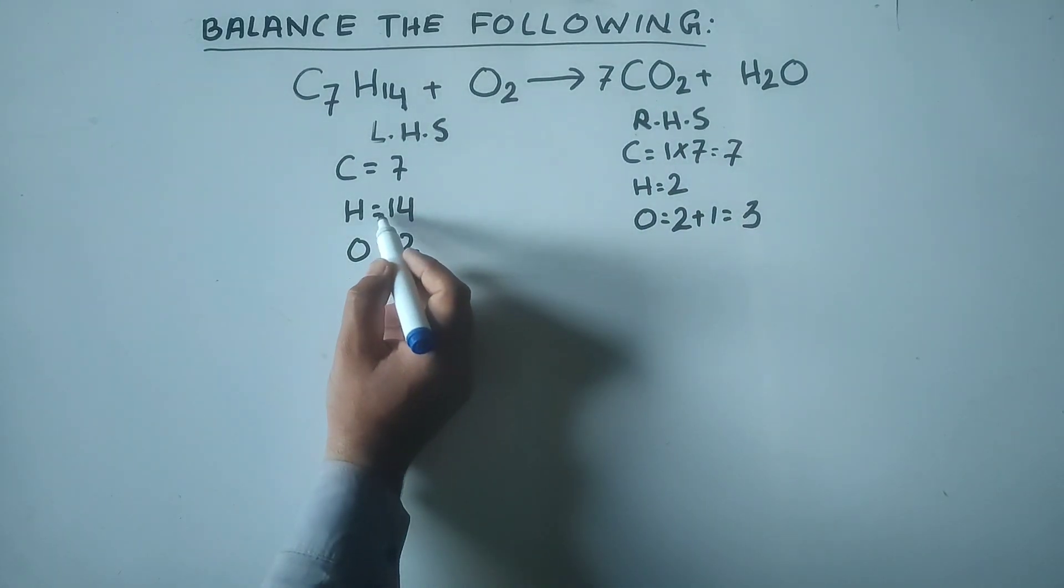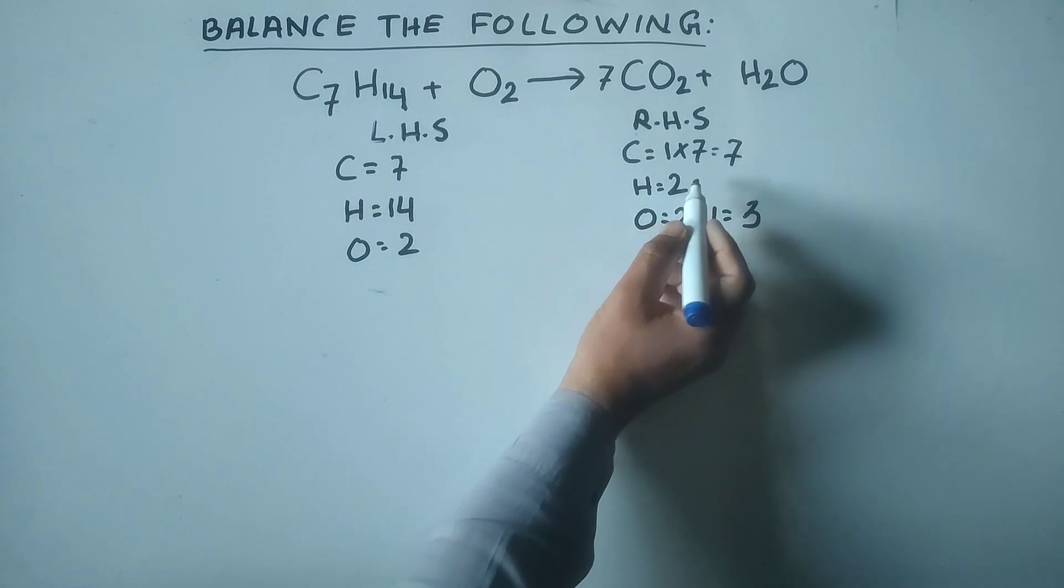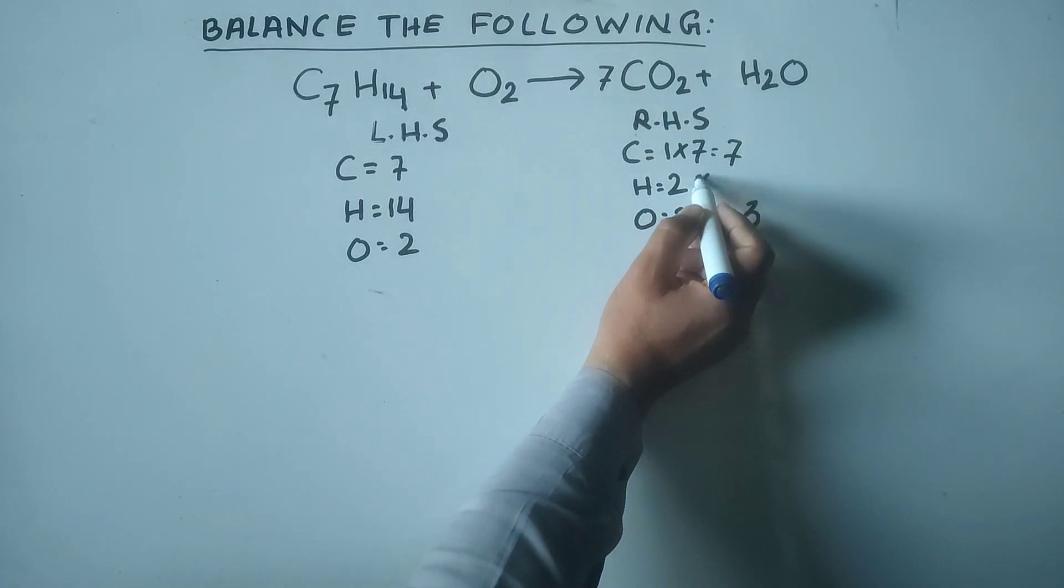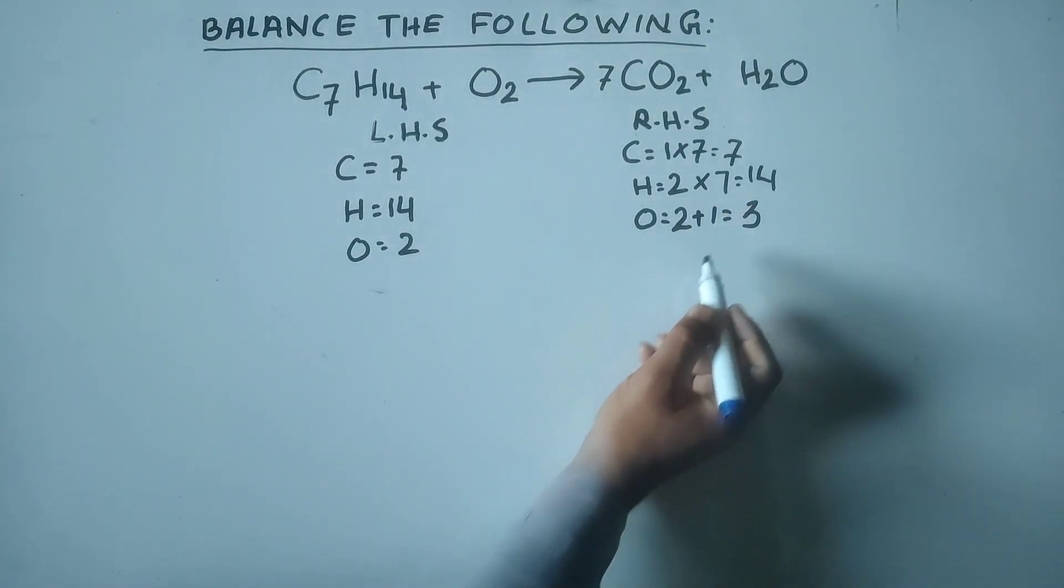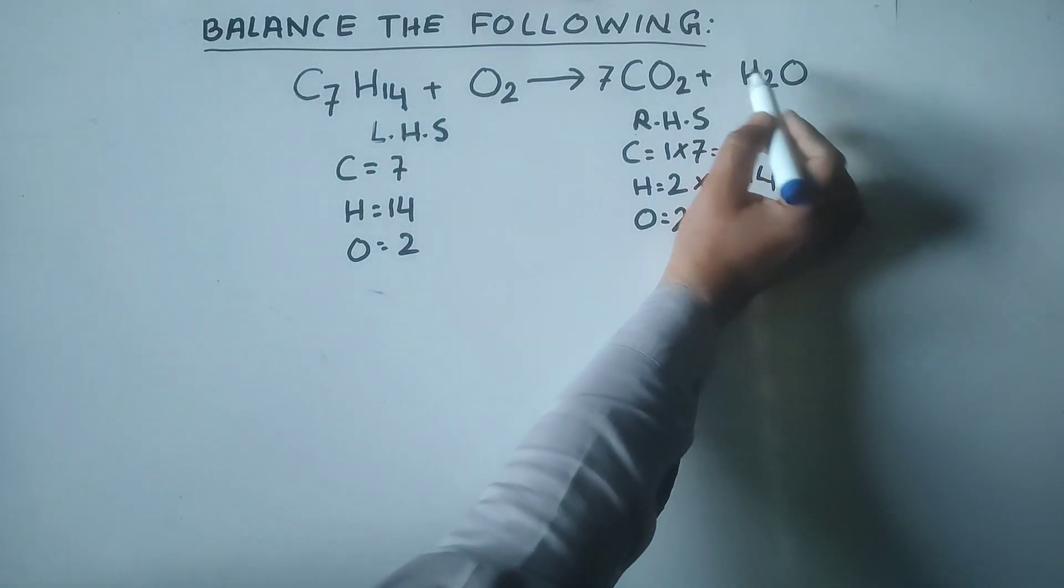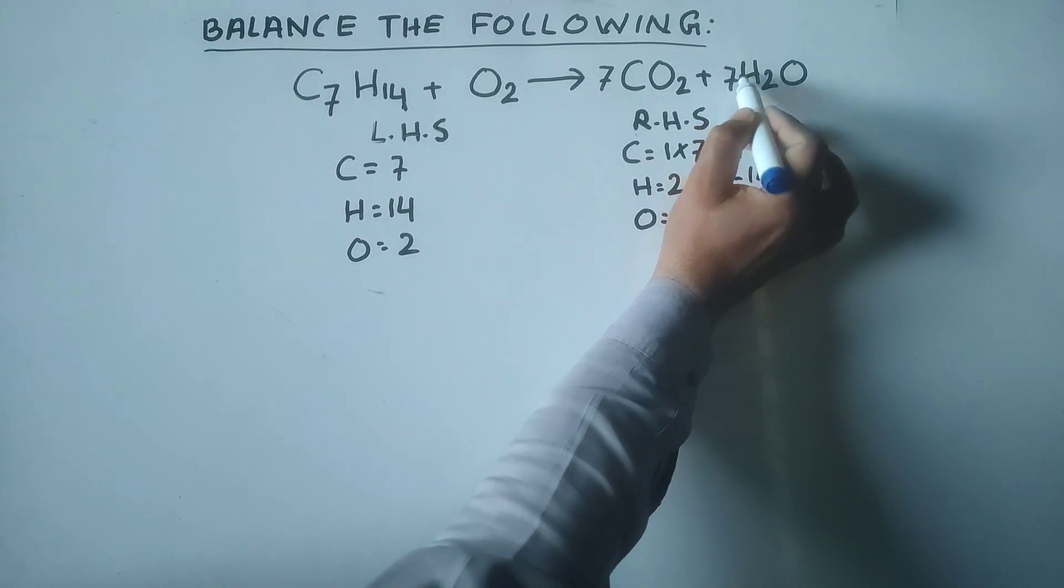Hydrogen atoms: 14 on the left, 2 on the right. If this 2 is multiplied by 7, this will also be 14. It means for water we add 7.